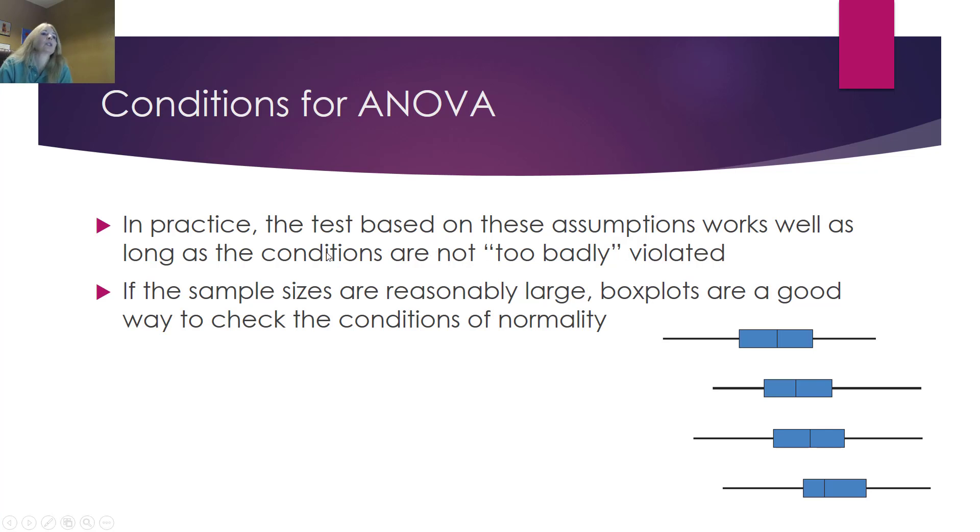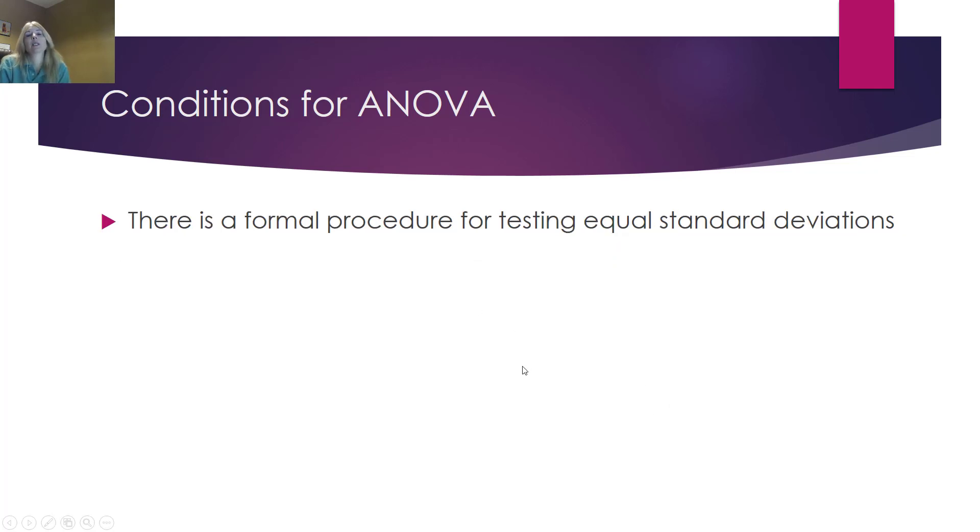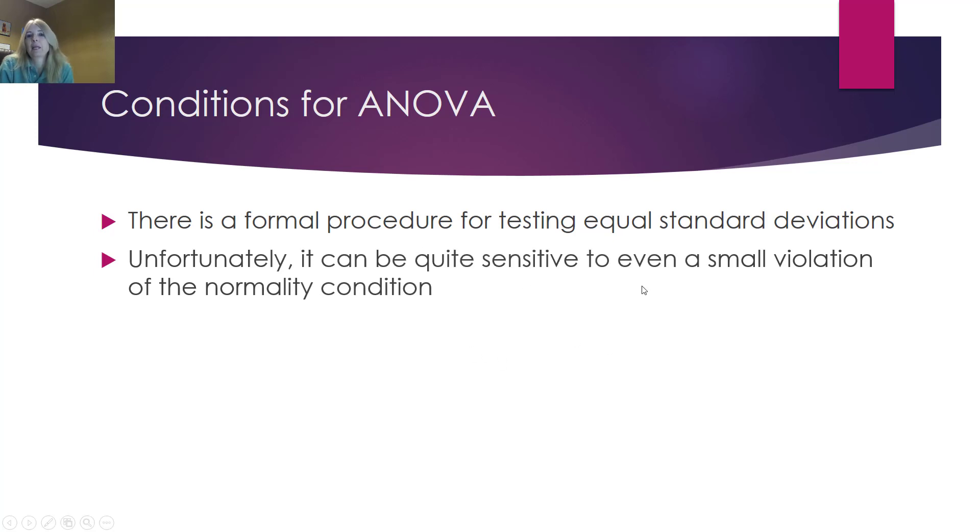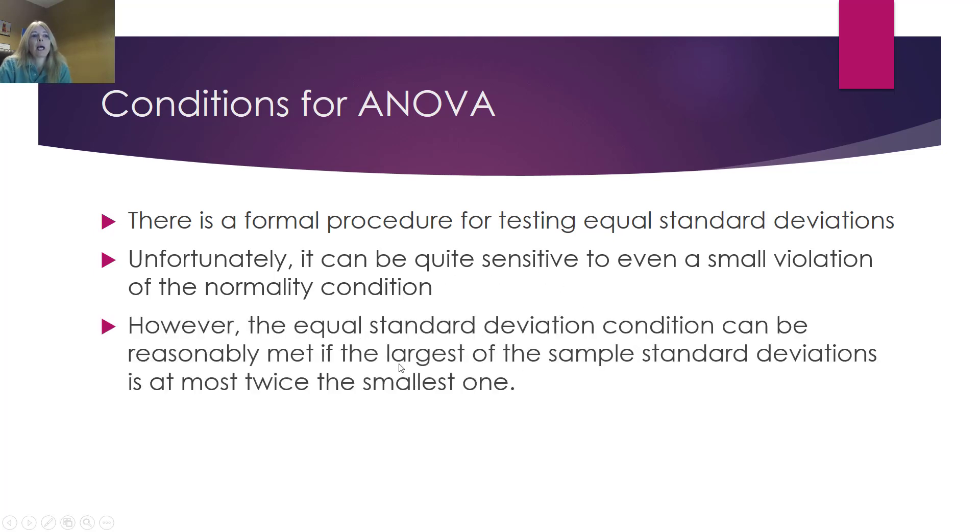And certainly when comparing the population means that the actual samples are selected independent of each other. In practice, the test based on these assumptions works well as long as the conditions are not too badly violated. We're not going to have exact variances, exact means, but it's very easy to look at box plots to see that pretty much they're all together. There's not a huge spread of one group versus another. This is what we use, our formal procedure for our ANOVA to test equal standard deviation. It can be quite sensitive to even small violations of the normality conditions. We need to make sure that our data is coming from a normal distribution. Once the equal standard deviation conditions are reasonably met, then if the largest of the sample standard deviation is at most twice the smallest one, then we're okay with these conditions.